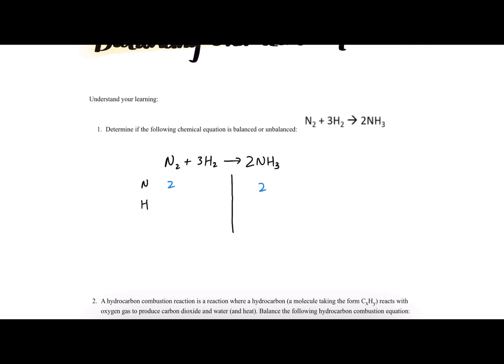Next, let's count the hydrogens. On the left side of the equation, we have a subscript of two and a coefficient of three. So we'll do two times three to find that there are six hydrogen atoms. And on the right, we have a subscript of three and a coefficient of two. So we'll multiply those together to find that there are six hydrogen atoms on the right as well.